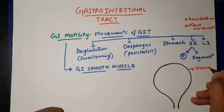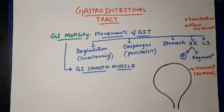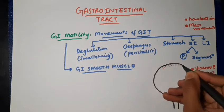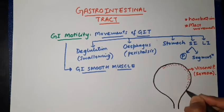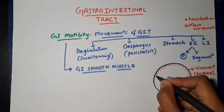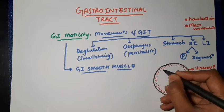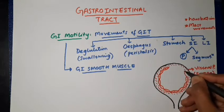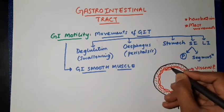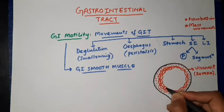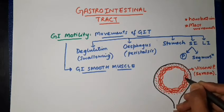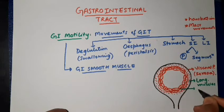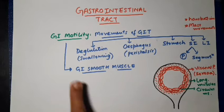The wall of the alimentary canal is surrounded by a layer of visceral peritoneum, also called serosa. Inner to the serosa we have the smooth muscle layers. The outer layer is the layer of longitudinal smooth muscles, and inner to this we have the layer of circular smooth muscles — spindle-shaped muscle cells. The outermost layer is serosa, and inner to it is the muscularis, which has an outer longitudinal layer and an inner circular layer.